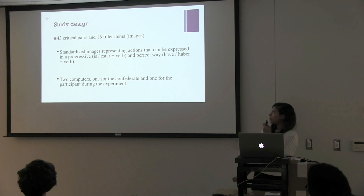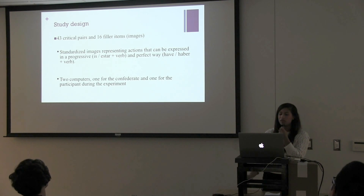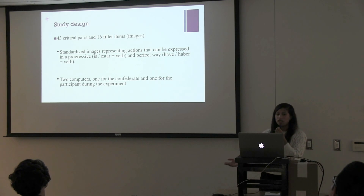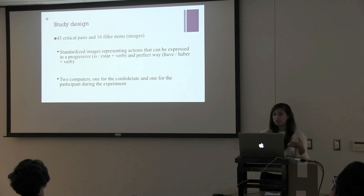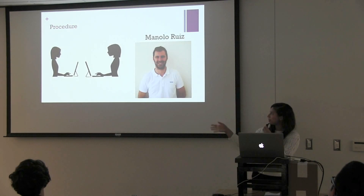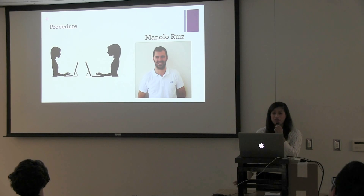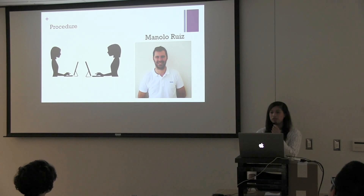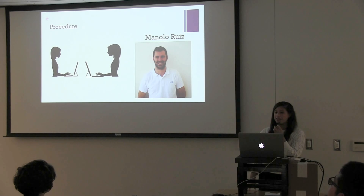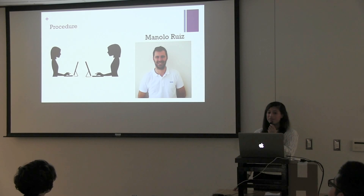My study design: there are 43 critical pairs and 16 filler items, which are all images. Participants had standardized images representing actions that could be expressed in a progressive or perfective way. Two computers were used — one for the participant and one for the confederate. The clip art picture to your left shows pretty much how they are set up. A confederate is a person who acts as a participant but is actually fully aware and engaged with the researcher about what the research is trying to analyze. In Granada, Manolo Ruiz was my confederate. Here in the U.S., I am the confederate.